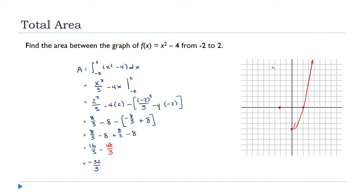Think back to our rectangles. If I draw an approximating rectangle in that region, the height of that rectangle is a negative number because f(x) is negative down there. So what my definite integral — going back to the Riemann sums — was doing is adding up a bunch of negative areas. It shouldn't come as a surprise that we ended up with a negative result.